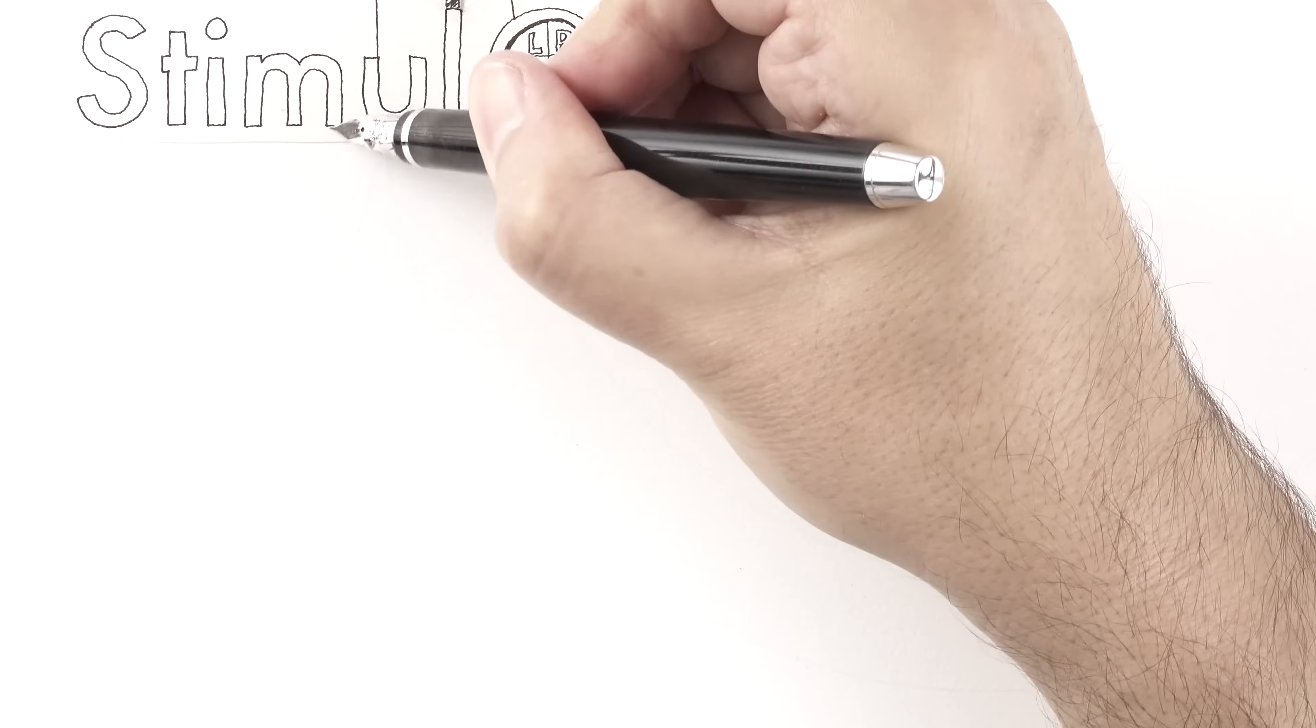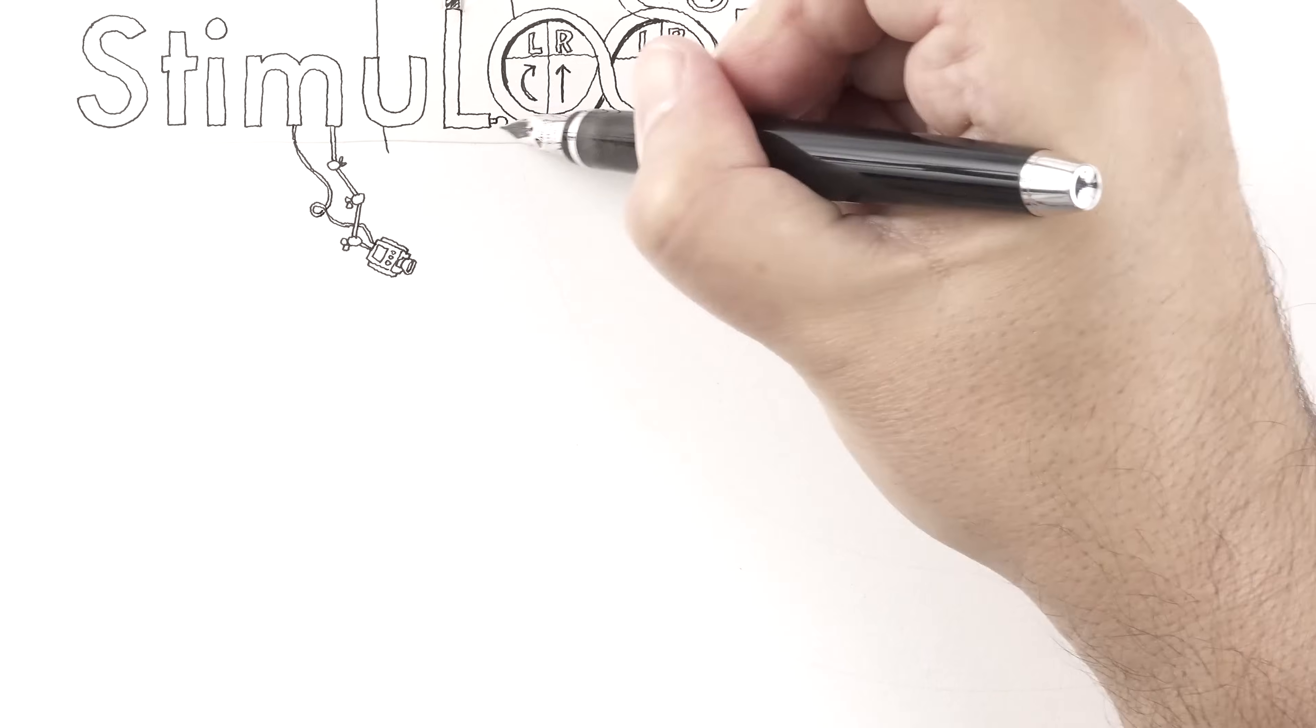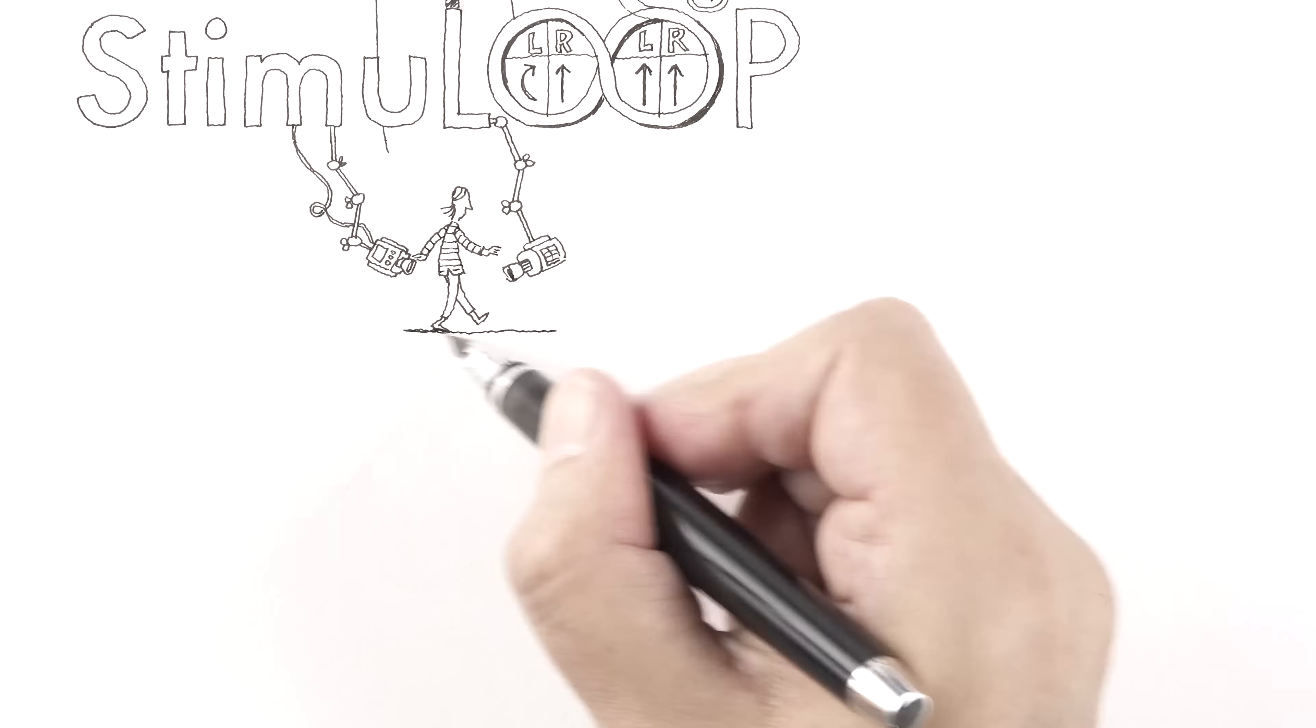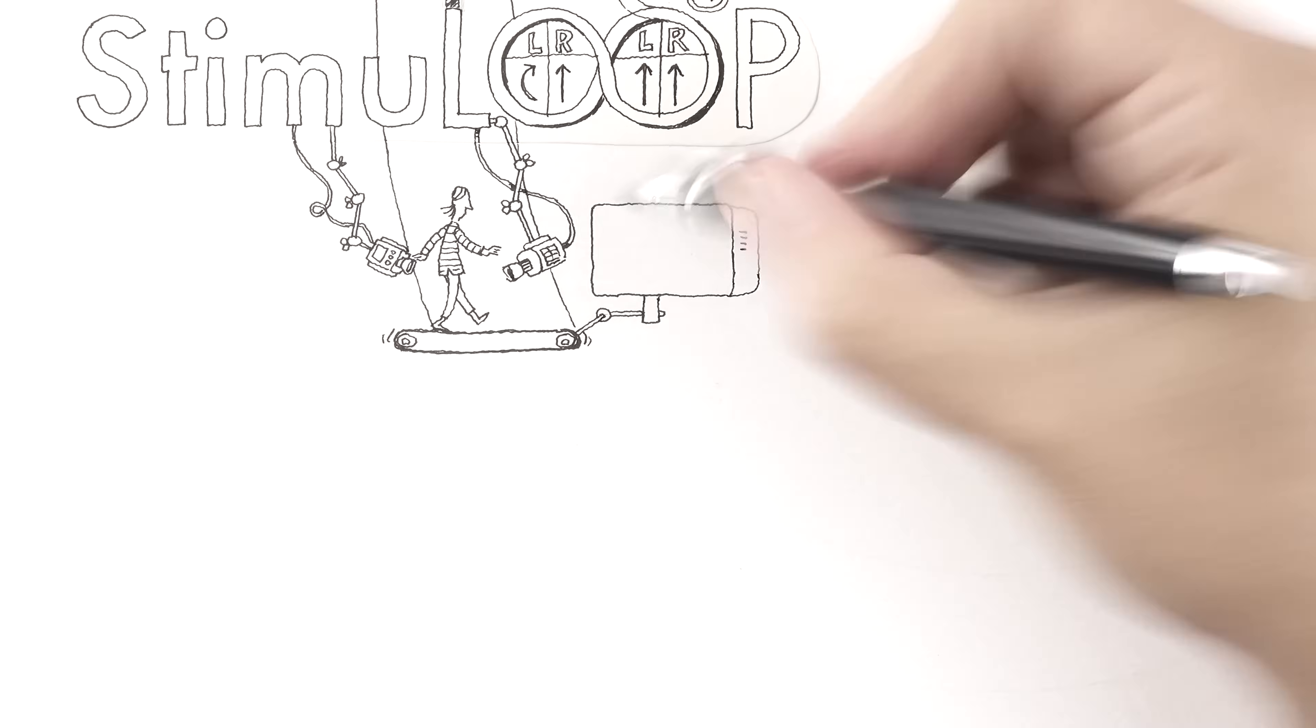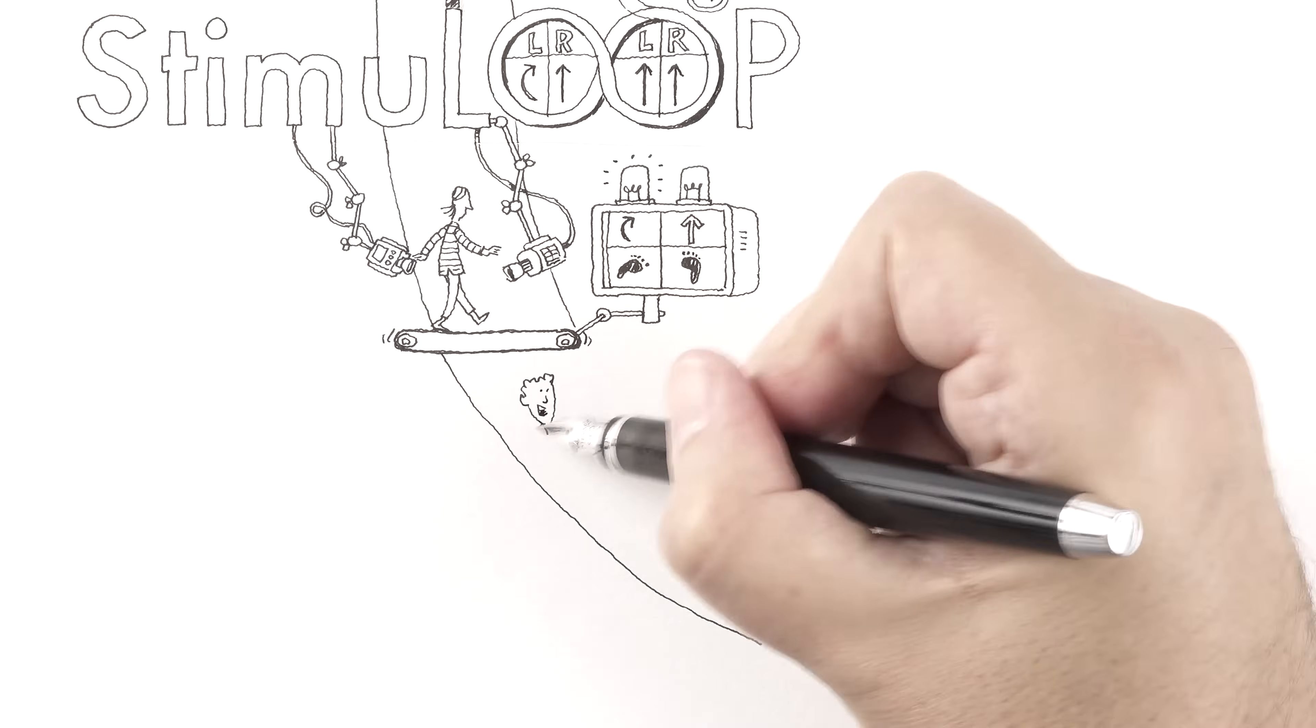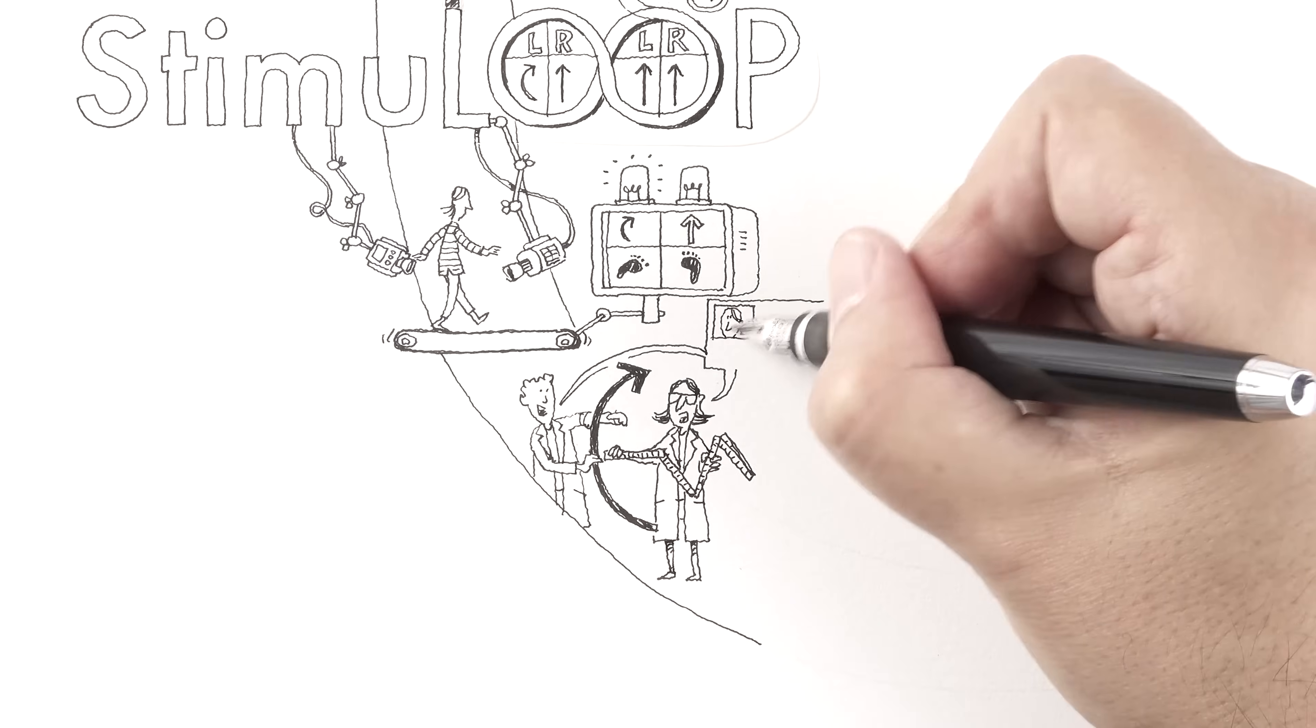The basis of personalised therapy is the precise assessment of the individual's gait pattern. In the Stimuloop project, a detailed three-dimensional gait analysis is used, accurately capturing deviations from a normal walking pattern. This allows us to determine exactly what is causing the gait disturbance in the affected patient.